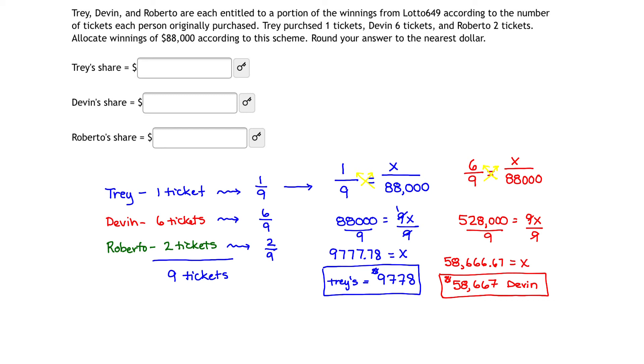Finally, we have Roberto. Roberto's last so we have one final proportion, and that proportion is that Roberto's winnings are two out of nine.